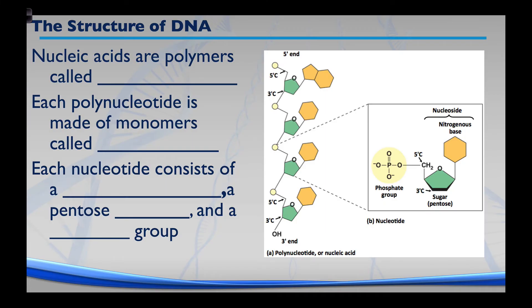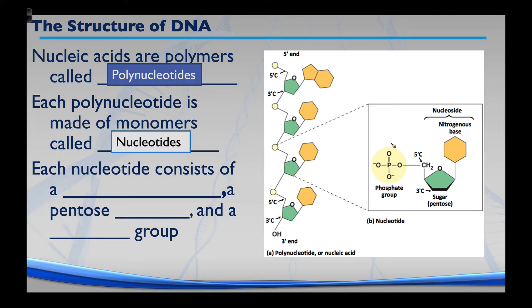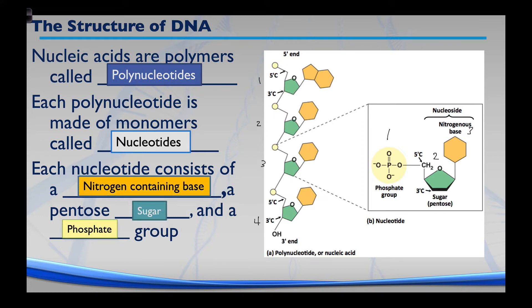Structure fits function — that's the common theme in biology, and that's where we're headed next with DNA's structure. Nucleic acids are polymers called polynucleotides, where poly means many and nucleotides are the official unit. A nucleotide is composed of three things: a phosphate group, a pentose sugar, and a nitrogenous base. This three-part molecule is the monomer in the chain. So nucleotide number one, two, three, and four linked together make a polynucleotide.